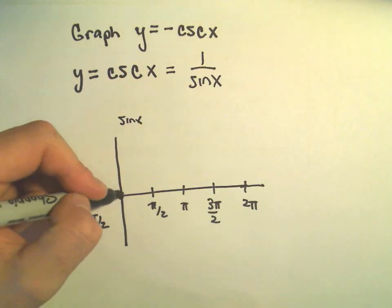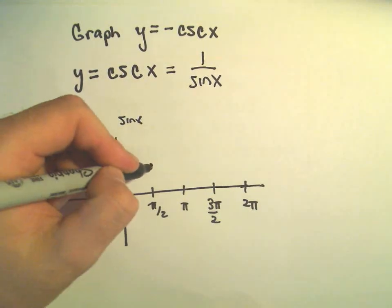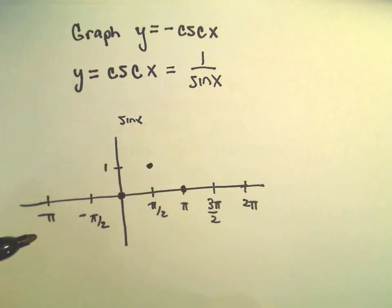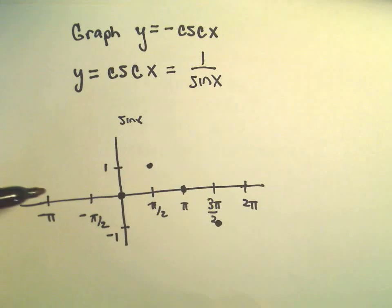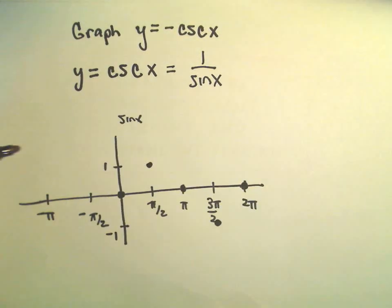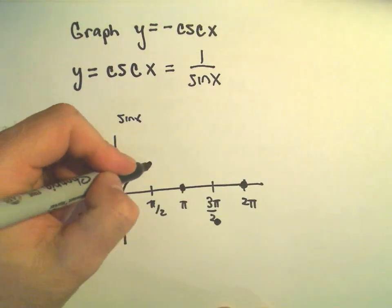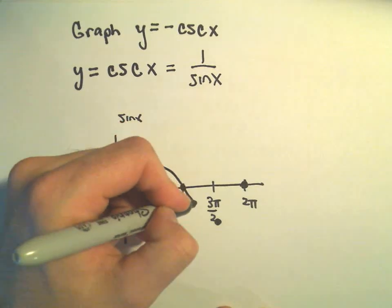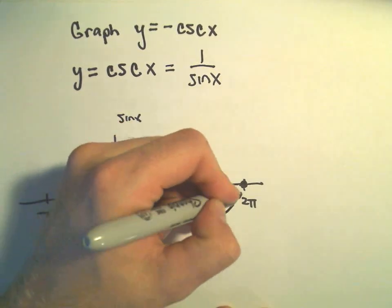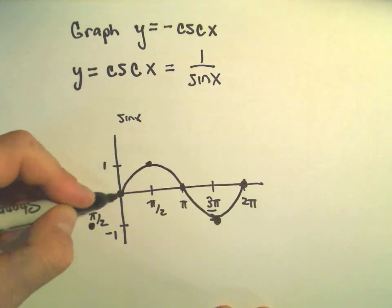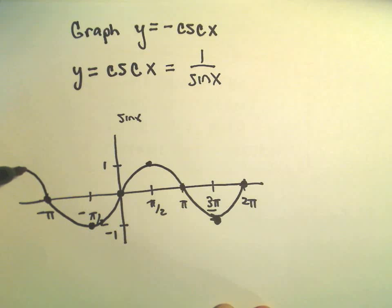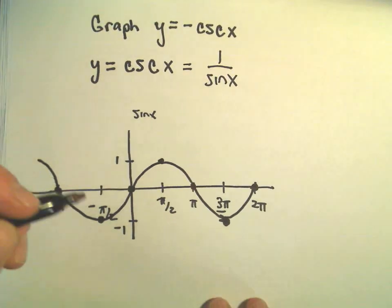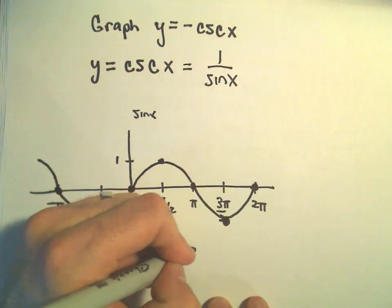Sine of 0 is 0, sine of pi over 2 is positive 1, sine of pi is 0, sine of 3 pi over 2 would be negative 1, and sine of 2 pi we'd be back at 0. At negative pi over 2 we'd be at negative 1, and at negative pi we'd be back at 0, and then it just keeps repeating. So there's our graph of y equals sine x.